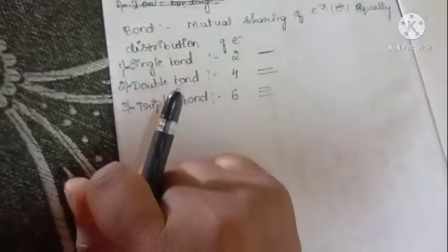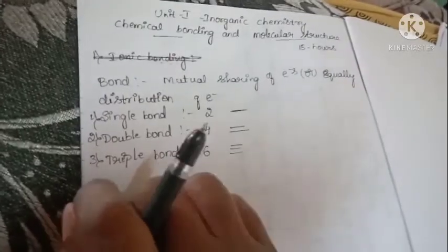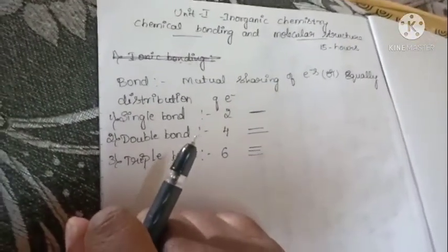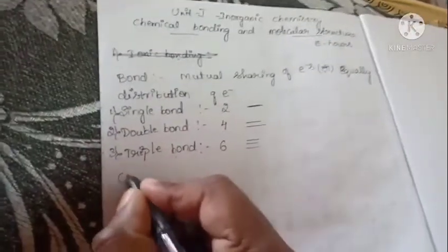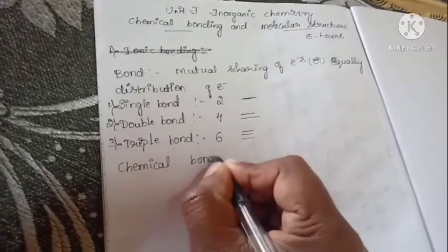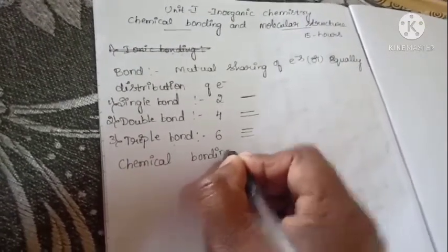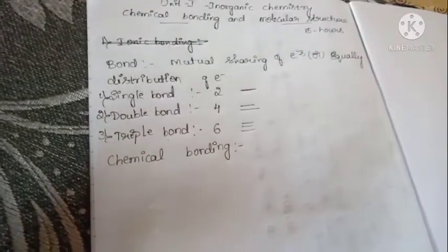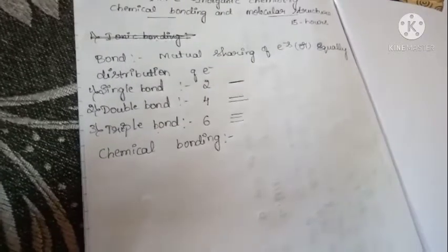Usually we know that a bond is a mutual sharing — mutually shared by their outermost shell electrons. Chemical bonding is nothing but sharing of a pair of electrons, mutually sharing of electrons or a pair of electrons.